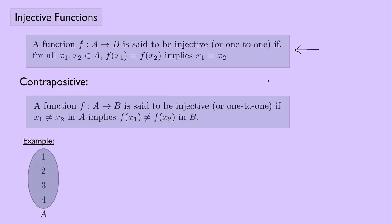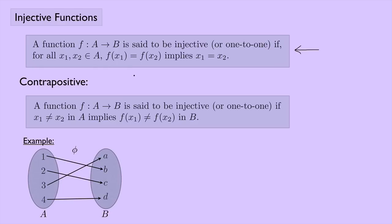Let's look at an example. Suppose I have a set a which has the numbers one, two, three, and four, and a set b which has the letters a, b, c, and d. I'm going to look at this function phi, which maps one to b, two to c, three to a, and four to d. Is this injective? We want something such that f(x1) equals f(x2) implies x1 equals x2. Looking at the values in set b, we see that just one thing is mapped to each element. So this is going to be injective. I'll show you how to actually prove it later on, but for now just note the difference between this example and the next.